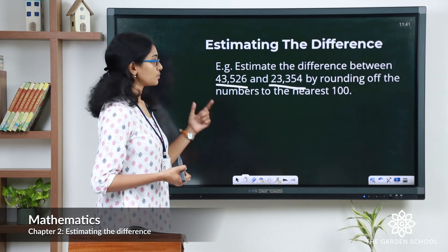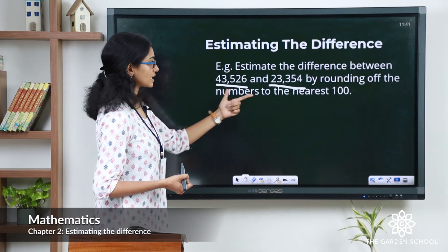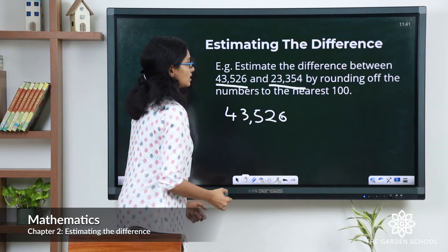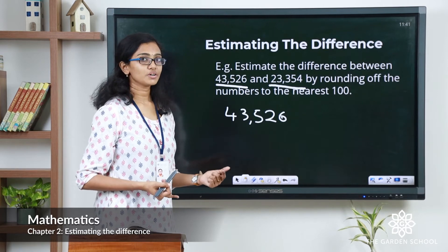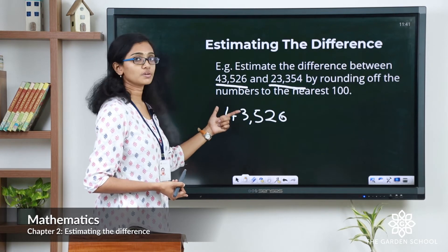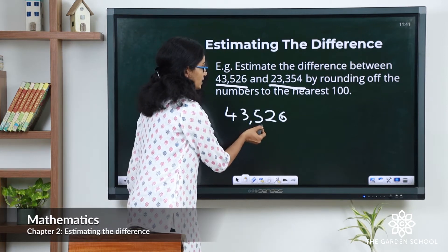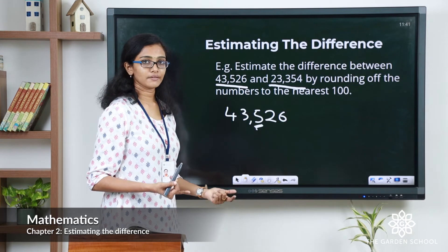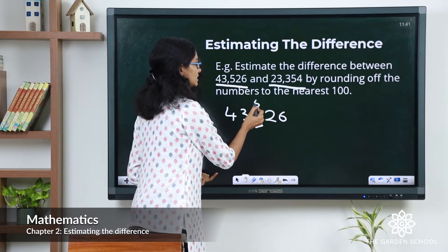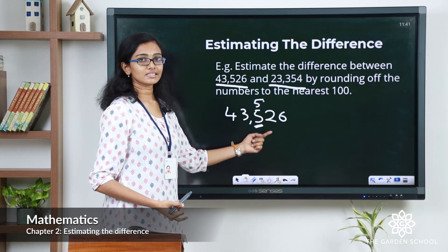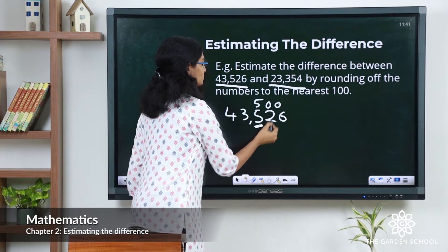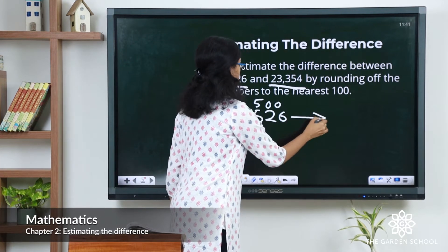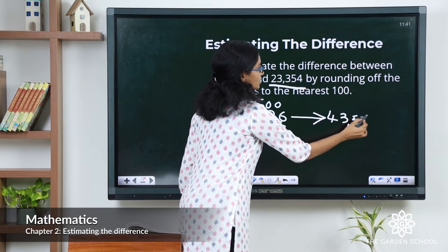First, let's round off the minuend to the nearest hundred. How do we round off 43,526? To round off to the nearest hundred, the rounding digit is the hundreds digit, which is 5 in this case. To the right of 5, we have the digit 2, which is less than 5. So let's keep the rounding digit as it is and change the tens and ones to zeros. So 43,526 rounded off to the nearest hundred gives you 43,500.